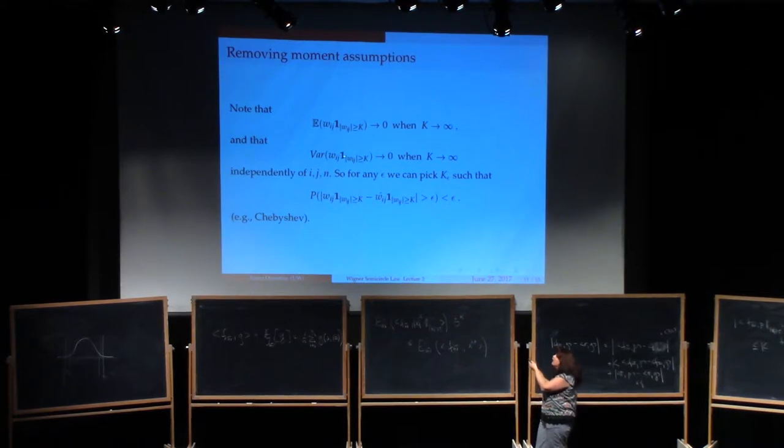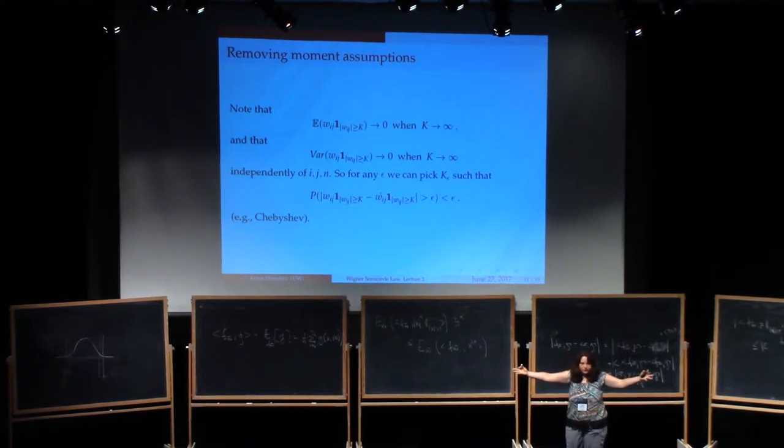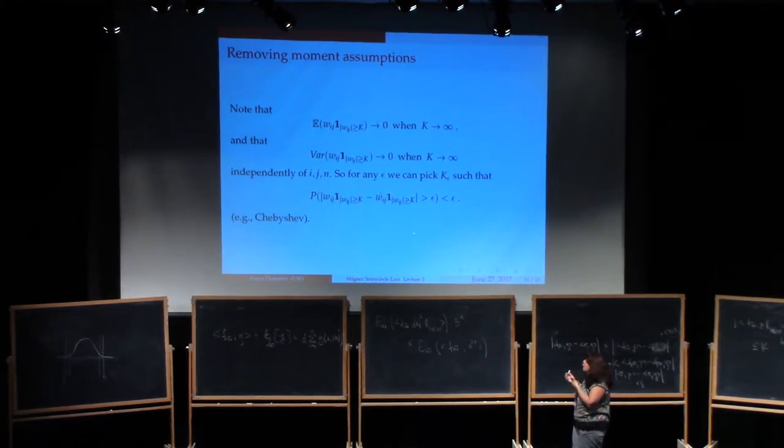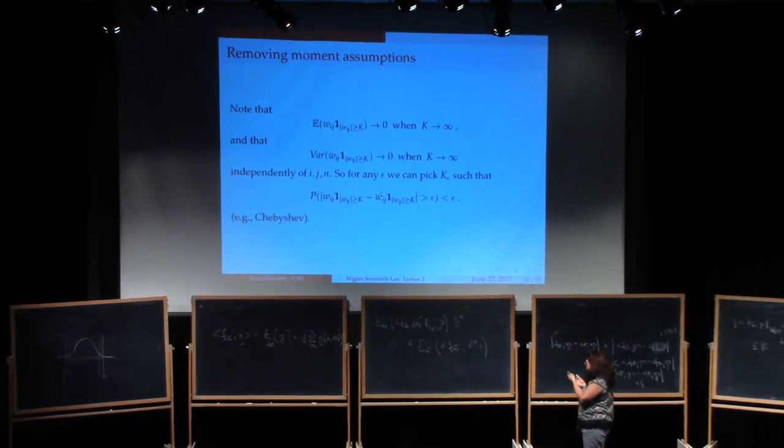Similarly, the same thing will happen with the variances for the same reason. As K goes to infinity, truncating these variables on bigger and bigger sets means that the variance of what lies outside goes to zero. But if you put these two things together, it follows that you can pick K depending on epsilon big enough such that essentially the probability that W_IJ falls outside minus K, K is very small.